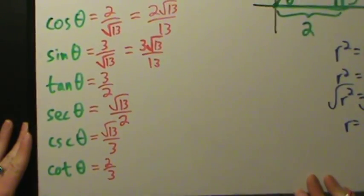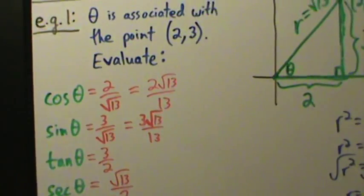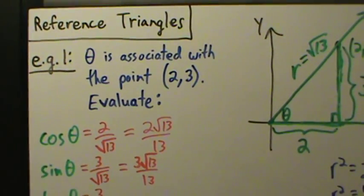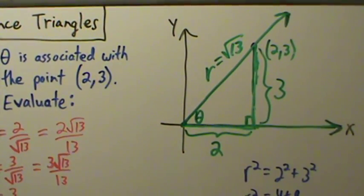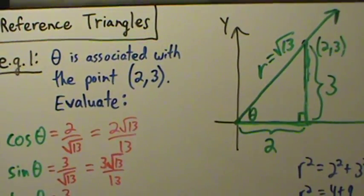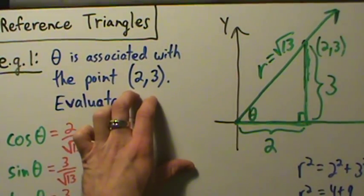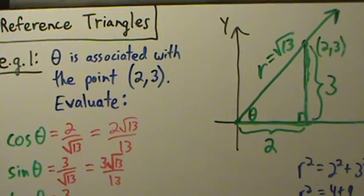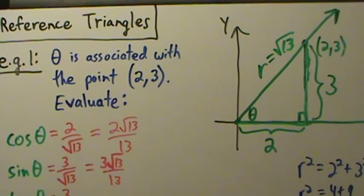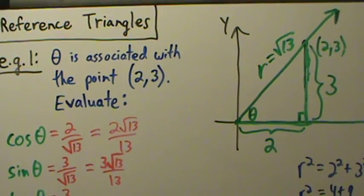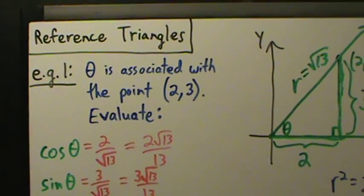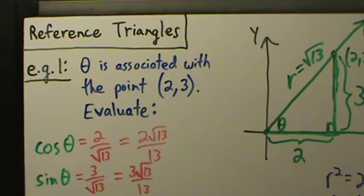That's it for example 1 of using reference triangles. As far as reference triangle problems go, this really wasn't too complicated. The only tricky thing was being careful because this point is not on the unit circle, so we can't automatically say cosine is the x-coordinate and sine is the y-coordinate. More complicated examples with reference triangles are coming up in the next few videos.